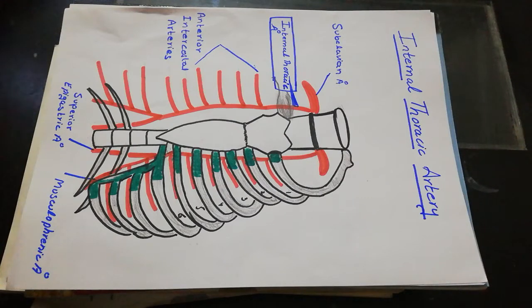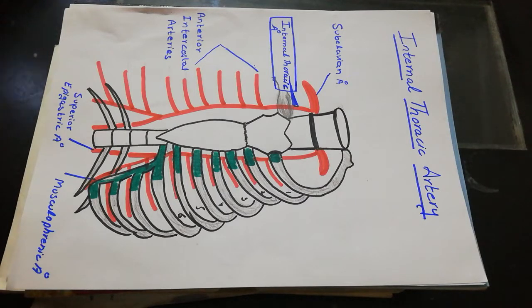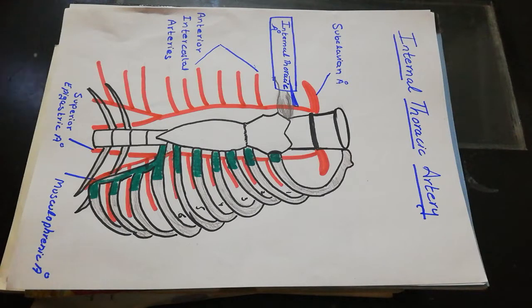This lecture is about the internal thoracic artery — its course, relations, and branches. The internal thoracic artery supplies the anterior thoracic wall and abdominal wall from the clavicle to the umbilicus. First, we will discuss its course.